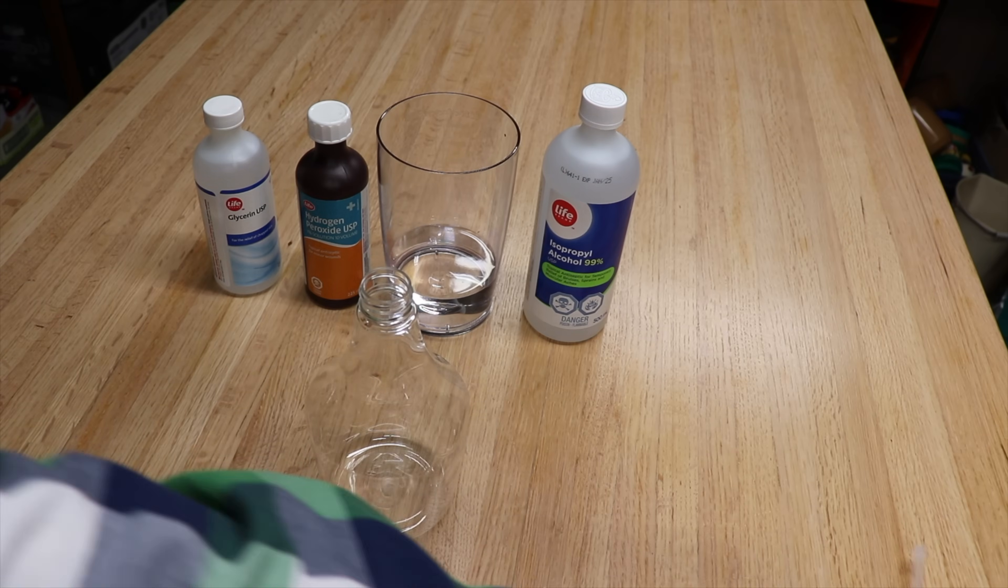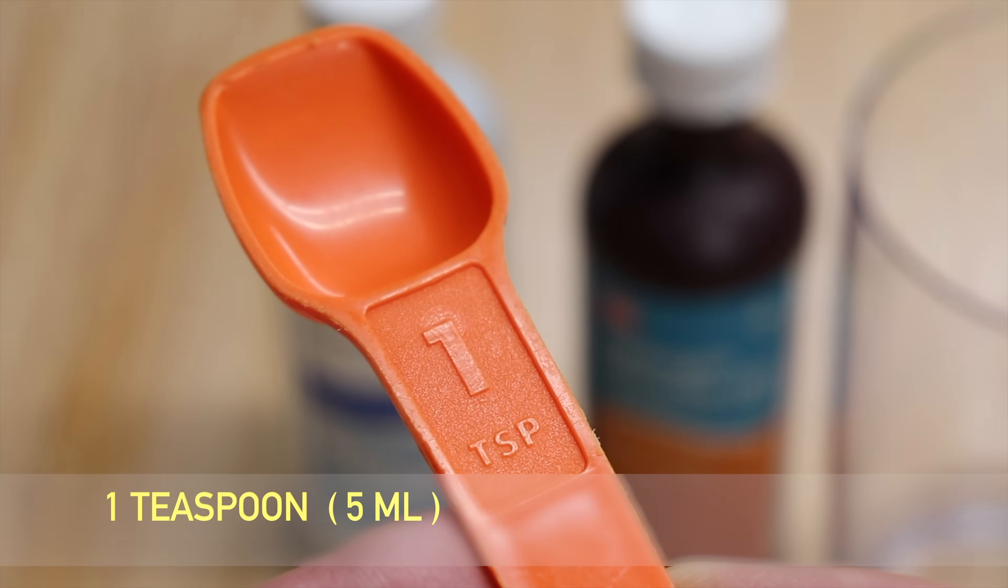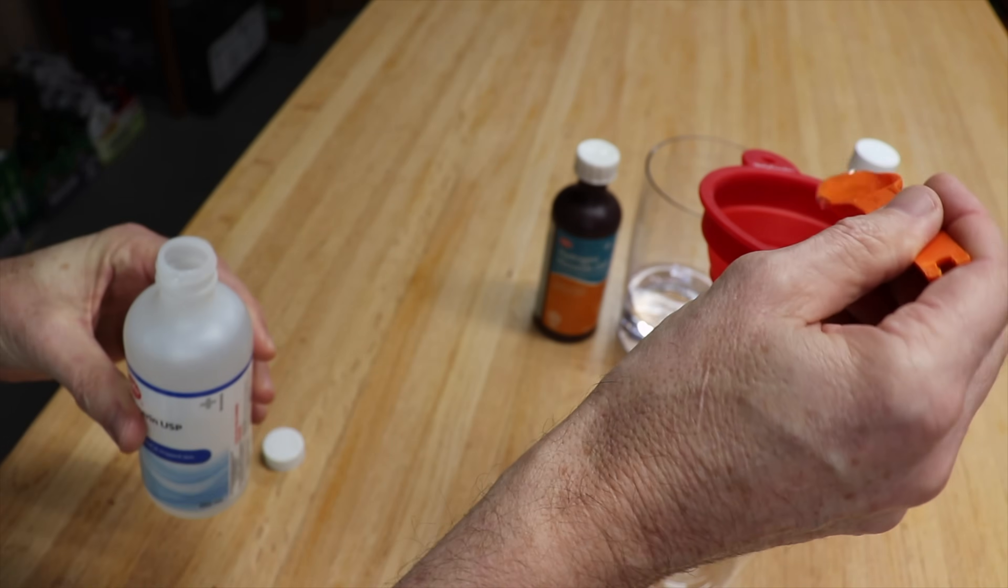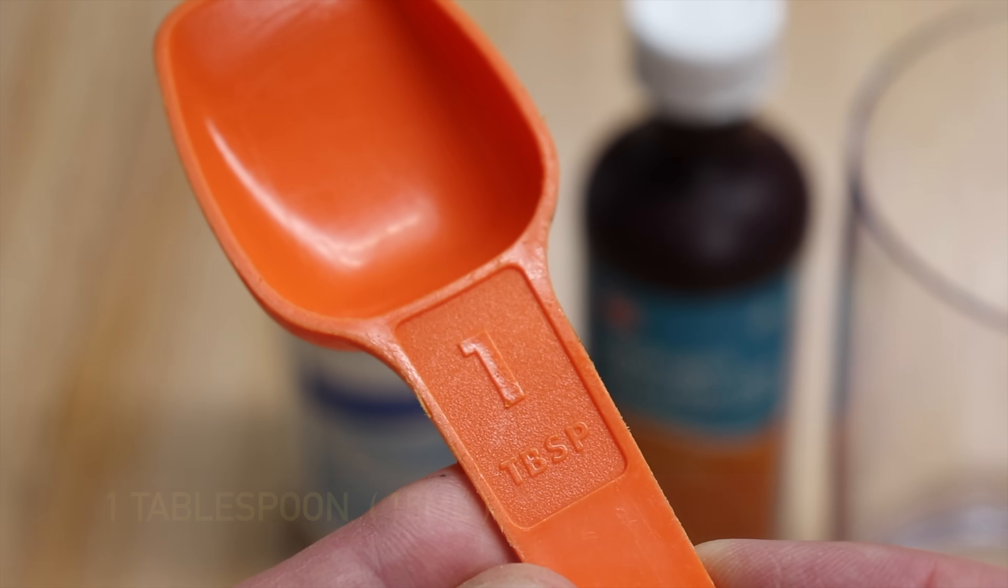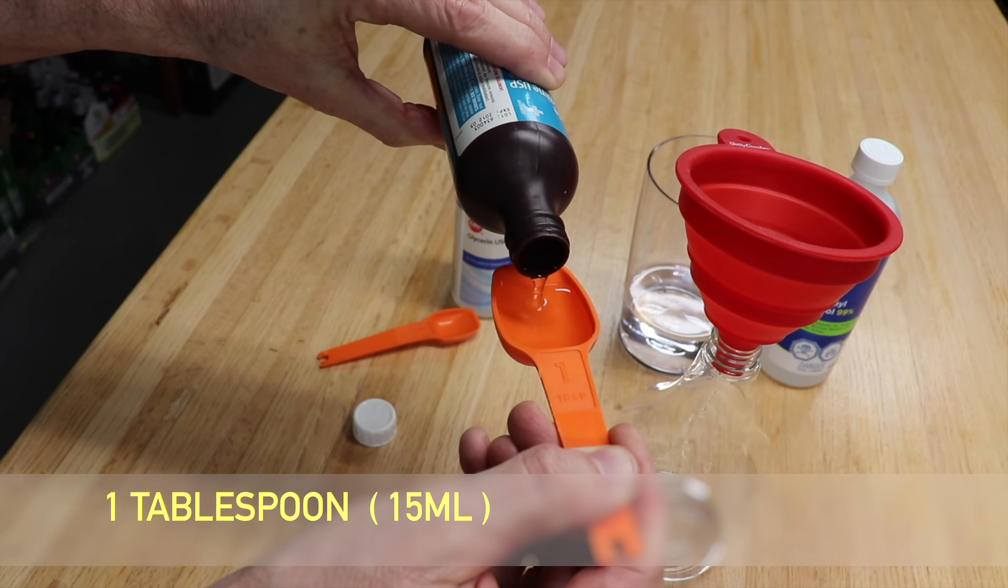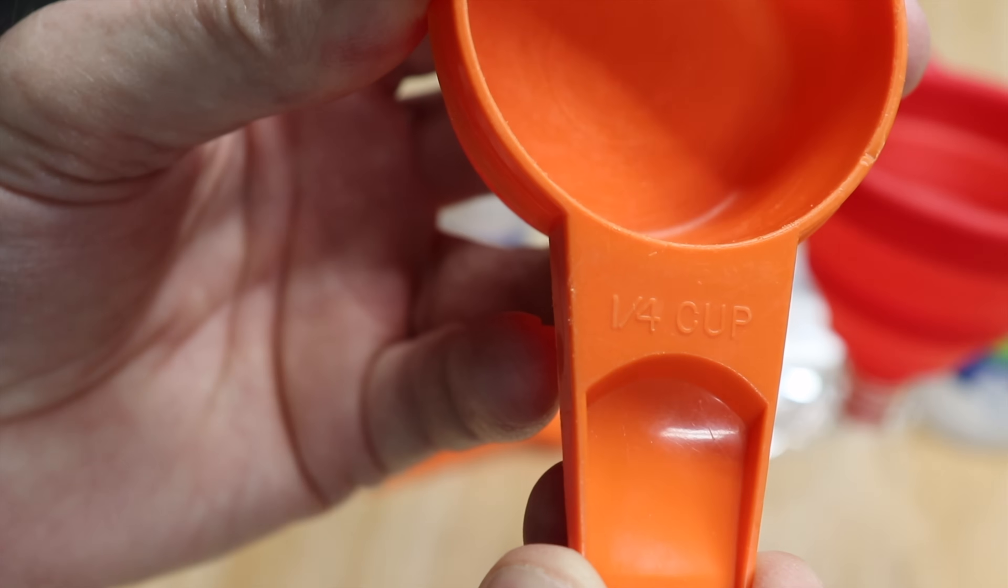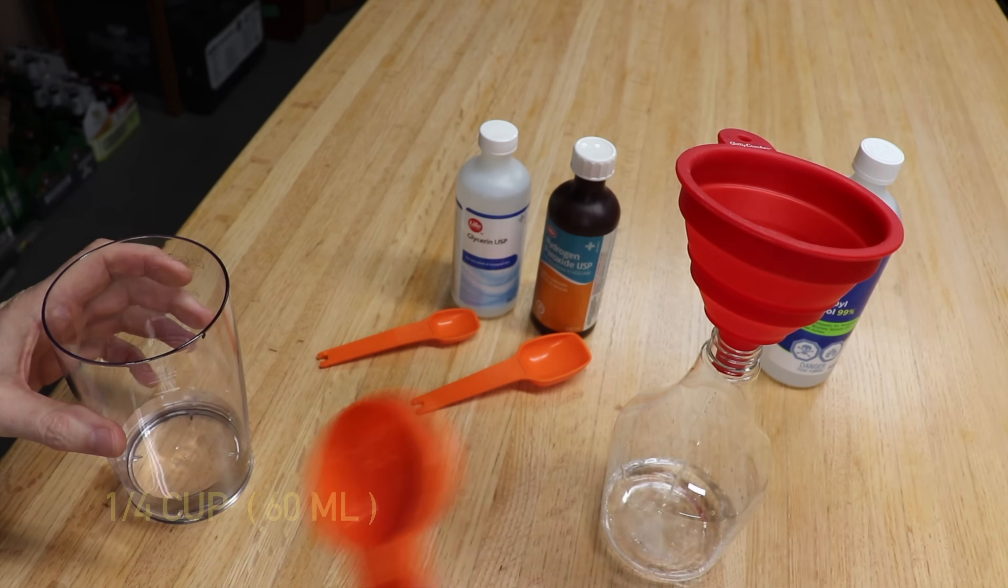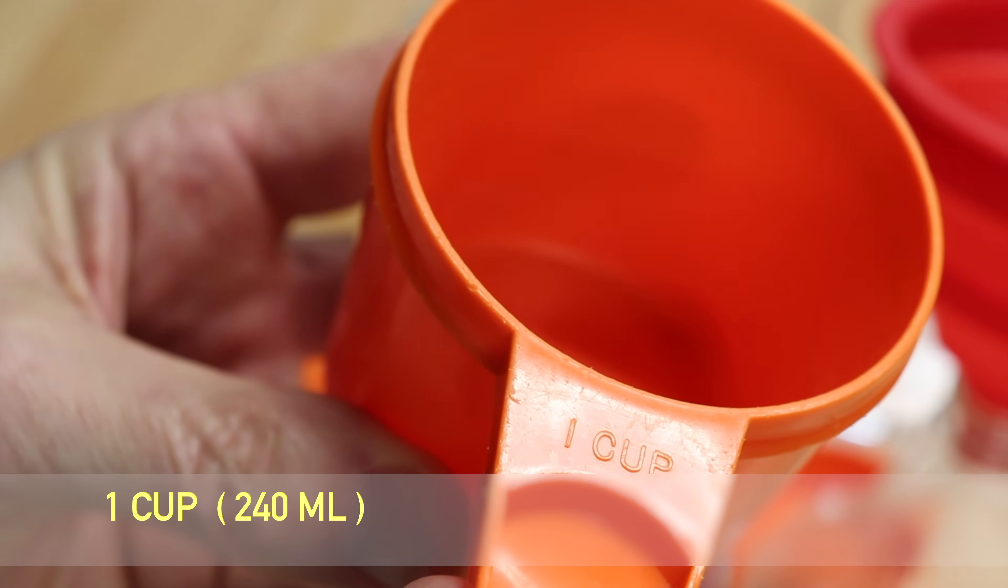So first grab your bottle, add one teaspoon of glycerin, one tablespoon of hydrogen peroxide, a quarter cup of water, and one cup of isopropyl alcohol.